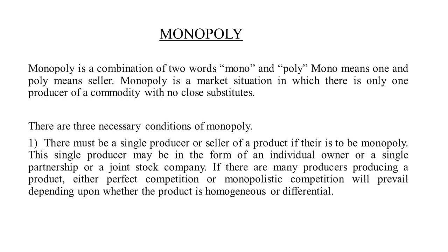Firstly, let's understand what is monopoly. Monopoly is a combination of two words: mono and poly. Mono means one and poly means seller. So, monopoly is a market situation in which there is only one producer of a commodity with no close substitutes. There are three necessary conditions of monopoly. The first condition is there must be a single producer or seller of a product. This single producer may be in the form of an individual owner, a single partnership, or a joint stock company.